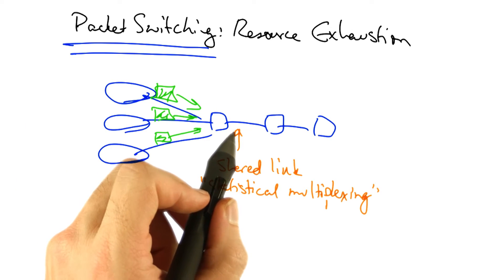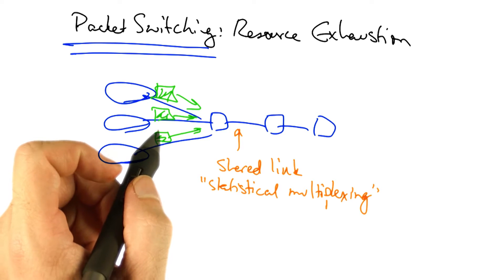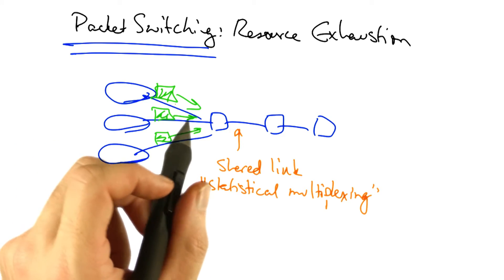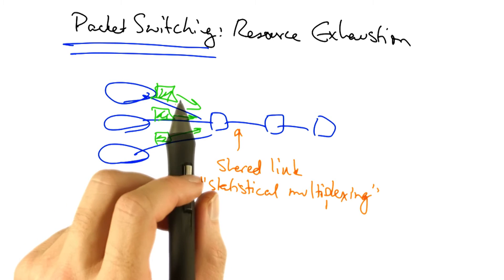In a packet switch network, a link may be shared by multiple senders at any given time, using statistical multiplexing, as we learned in previous lessons.